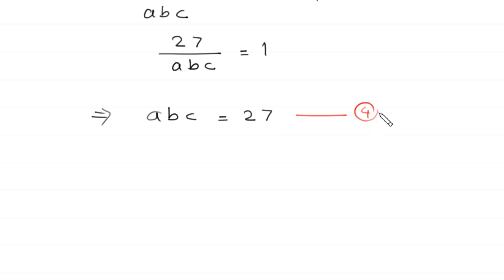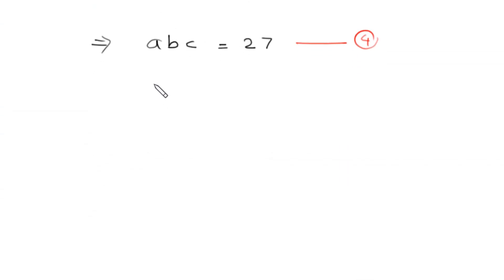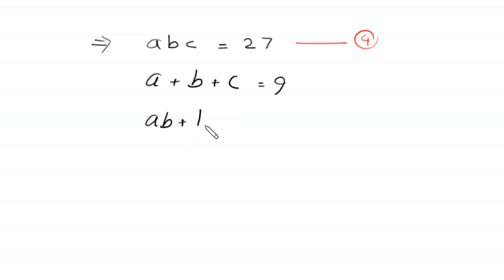Now, we recall equations 1 and 2. Equation 1 is a plus b plus c is equal to 9, and equation 2 is ab plus bc plus ca is equal to 27.